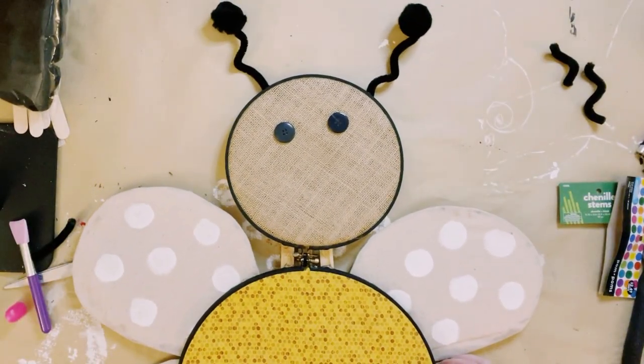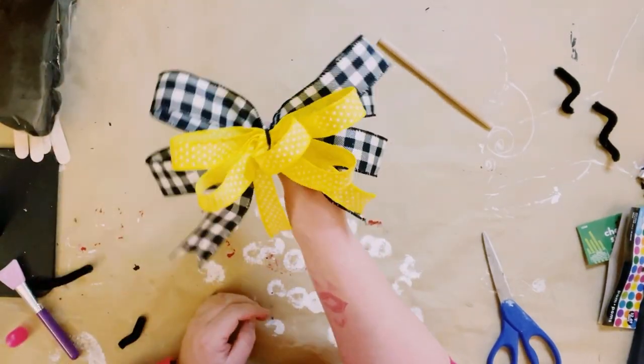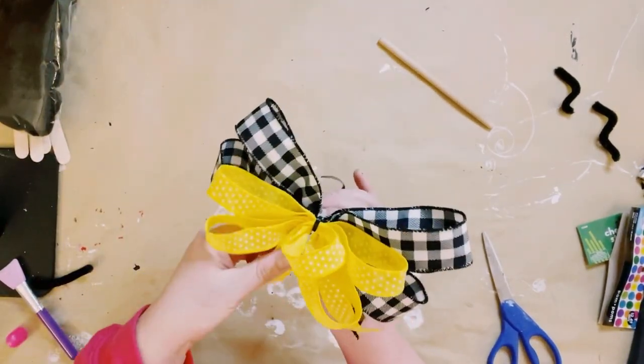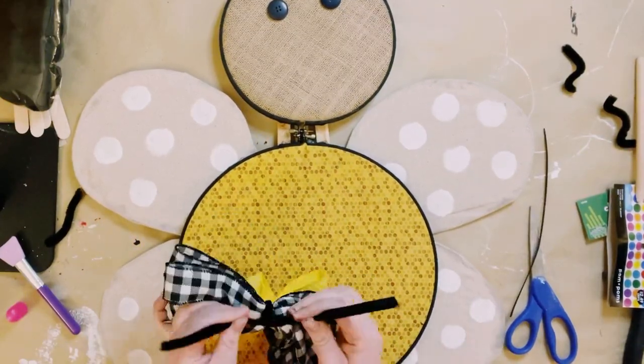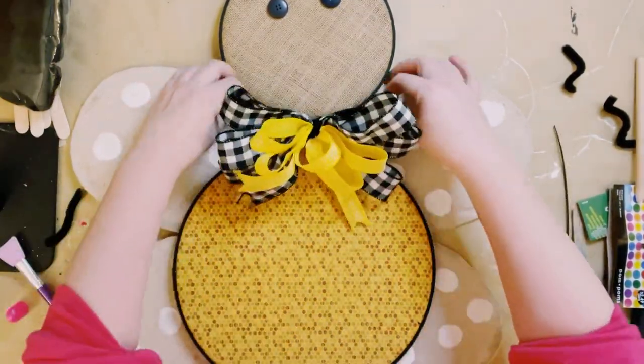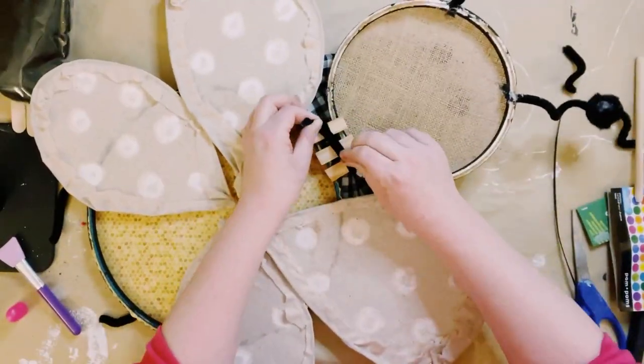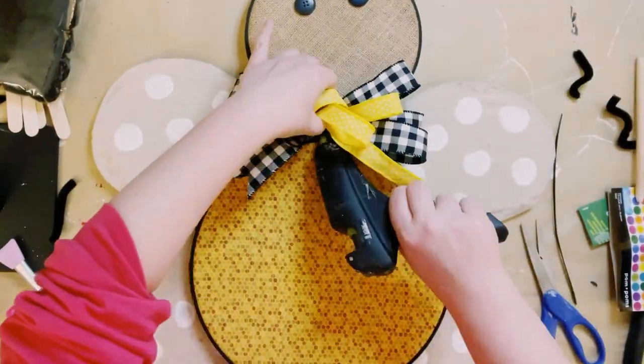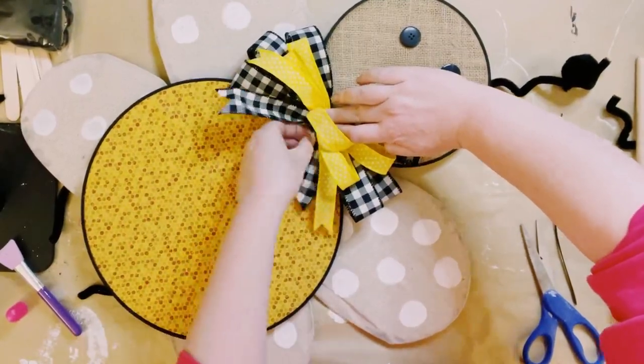To cover that gap in between the small and large embroidery hoop, I just created this fluffy bow. I did just tie a pipe cleaner around the bow, and then I'm just going to attach it. Just place it around the back, give it a good twist, and then I did end up adding some hot glue underneath it just for some extra support.